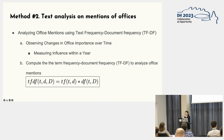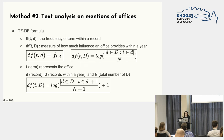The second analysis method we employ is text analysis on mentions of official positions. Through this method, we analyze the frequency and relevance of different official positions in Ming Shilu using the TF-DF method. TF is the frequency of a term within a record, and DF is a measure of how much influence an office provides within a year. We collect official position entities mentioned in the records, apply the TF-DF formula, and focus on strengthening the relevance of terms that frequently appear in multiple records within the same year.